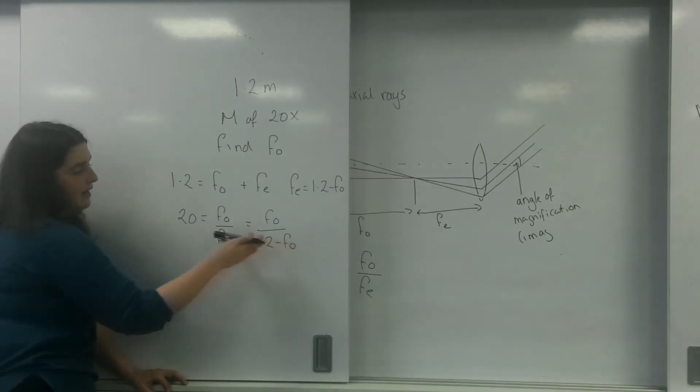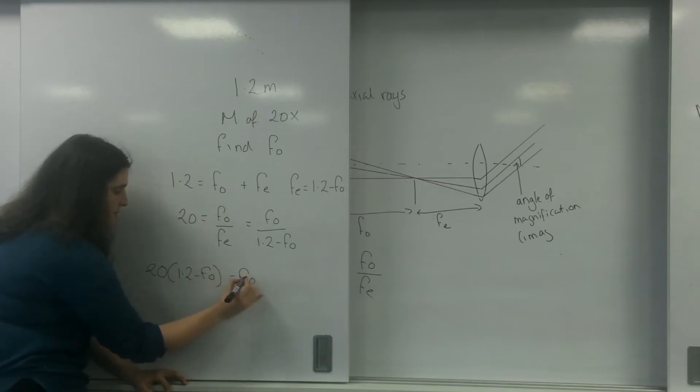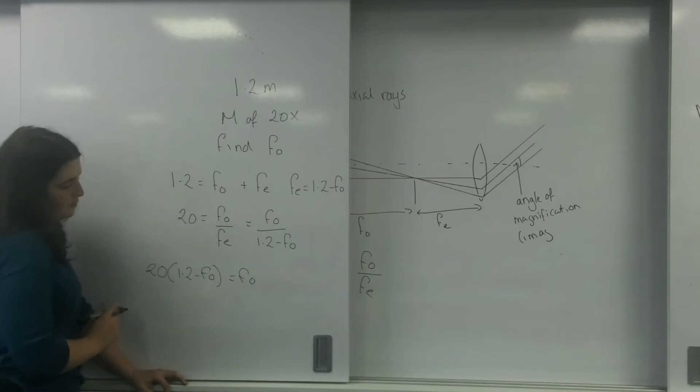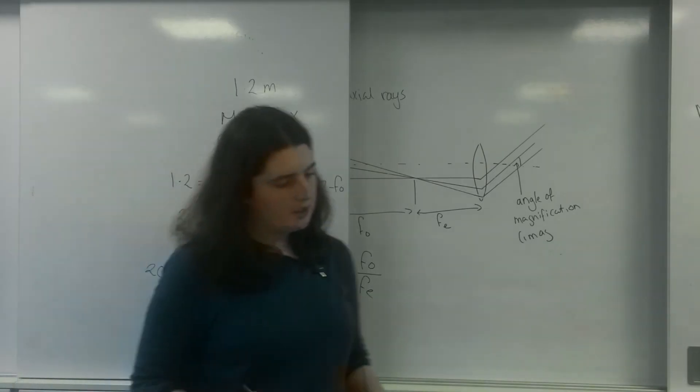I'm going to do some rearranges. I'm going to bring that up. So I'm going to end up at 20 times 1.2 is going to be 24, I believe.